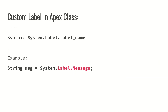To use a custom label in Apex classes, the syntax is System.Label.labelName. In this case the label name is 'message', so it will be System.Label.message, and the value that particular custom label holds will be displayed.